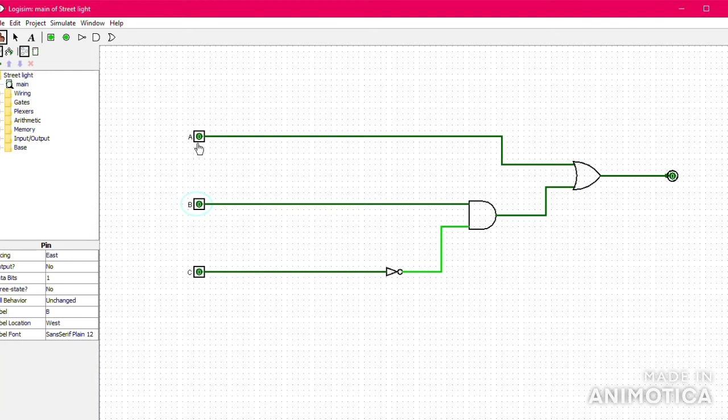When A is equal to zero but B and C are equal to one, the output will be zero. When A is equal to one but B and C are equal to zero, the output will be one.